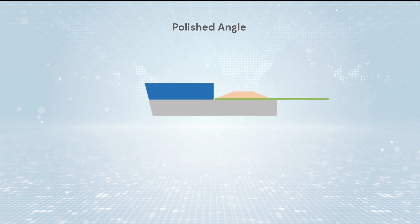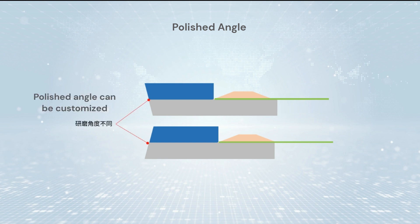The end-face angle can be ground to 8 degrees, negative 8 degrees, or 0 degrees. The flatness is usually less than 200 nm, the fiber height is less than 200 nm, and the angle accuracy can be controlled within plus or minus 0.3 to 0.5 degrees.